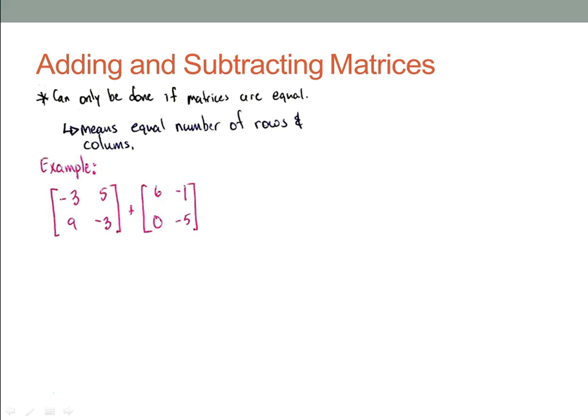And the way that matrix, adding and subtracting matrices works is I have negative 3, which is in the first row, in the first column, added to the element in the first row in the first column of the second matrix. So all of them add only the ones that match together. So you'll see that each time here. So negative 3 plus 6 is equal to positive 3. Positive 5 plus negative 1, of course, is equal to positive 4. 9 plus 0, of course, is 9. And negative 3 plus negative 5 is negative 8.